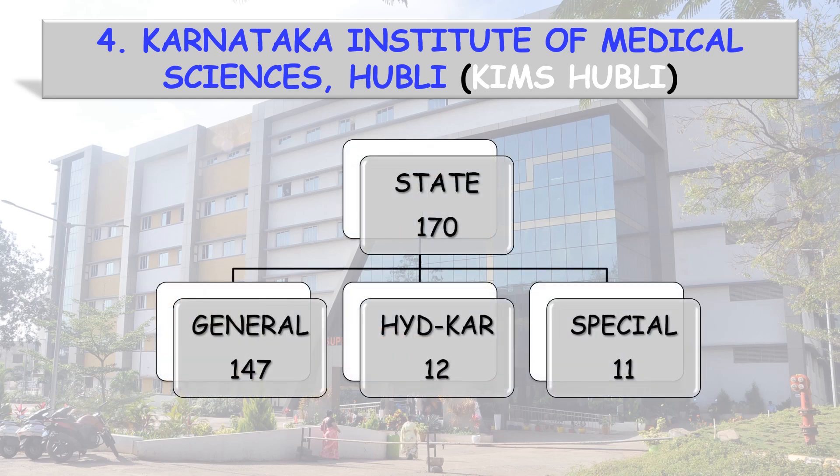State category 170 seats are divided into 3 categories: General 147 seats, Hyderabad-Karnataka Reservation (also called Kalyan-Karnataka) 12 seats, and Special Category Reservation 11 seats.